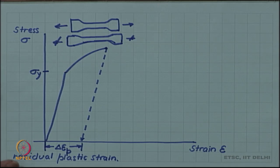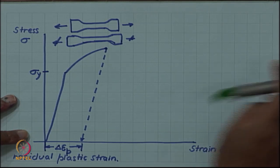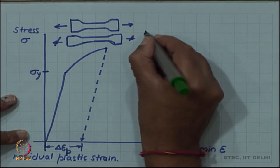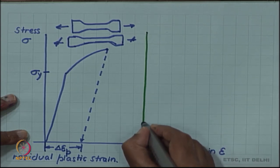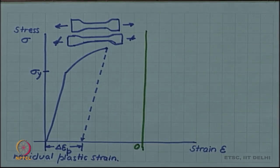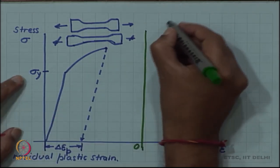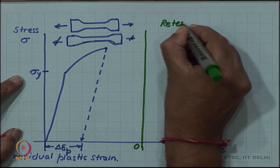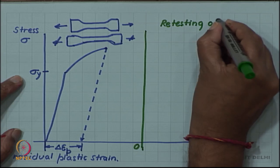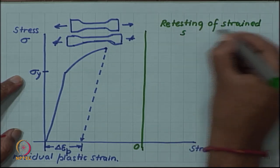Since this specimen is still existing — we have not lost it, it has not broken — suppose we repeat the tensile test on it. Let me create a new axis for our repeated tensile test. We are shifting the origin, taking the new zero of the strain here, and we are retesting the strained or deformed sample.